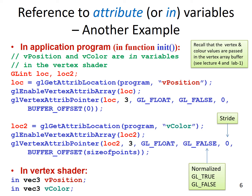Here is another example where we are referencing two attribute or in variables — one is the vertex position as defined before, and the other is the vertex color. Recall that the vertex and color values were passed in the vertex array buffer, which was a single buffer. We must have both vertex position and vertex color variables defined inside the vertex shader with the qualifier in. Note that we have a stride of zero in both cases and the data does not need to be normalized. Both are three-dimensional variables. The difference is that vertex position has no offset because the first half of the array contains vertex position values, whereas the last half contains color values — so we have a size-of-points offset to the buffer for vertex color.